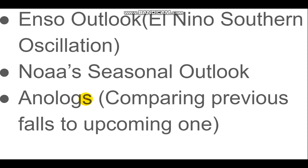The factors I'll be looking at in this video are the ENSO Outlook — the El Niño Southern Oscillation — the NOAA Seasonal Outlook, which I actually pretty much didn't factor in at all. I just don't think they have the right idea because usually they just do it off of one model and don't really update it until the relatively short term. And then we'll be looking at analogs — comparing previous falls that were neutral and making an analog map out of that.